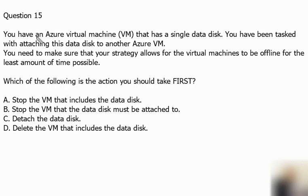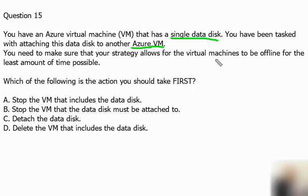Question number 15: you have an Azure virtual machine that has a single data disk. You have been tasked with attaching this disk to another Azure VM, so we need to detach it from there and attach it to another VM. You need to make sure that your strategy allows for the virtual machine to be offline for the least amount of time possible.